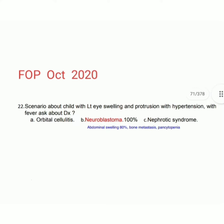Going to exclusion of other diagnoses: in orbital cellulitis, eye proptosis and swelling are present with painful eye movement, but there is no hypertension association. For nephritic syndrome, other features are present such as oliguria, anuria, massive proteinuria, hypoalbuminemia, generalized edema, hyperlipidemia, and double chin.